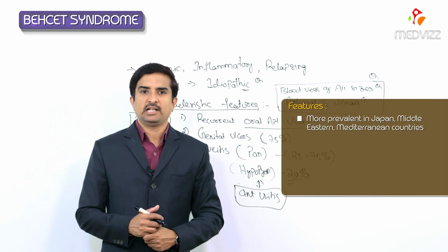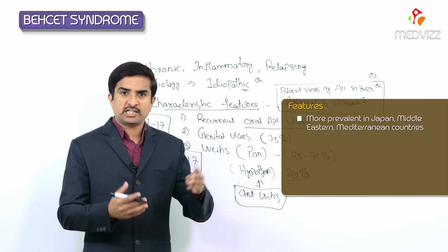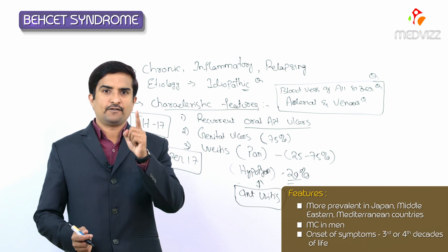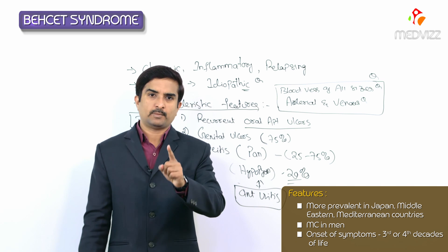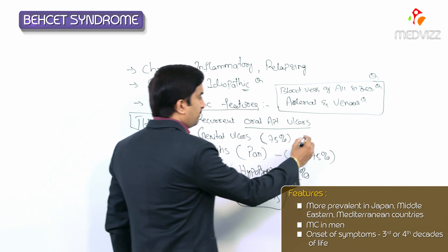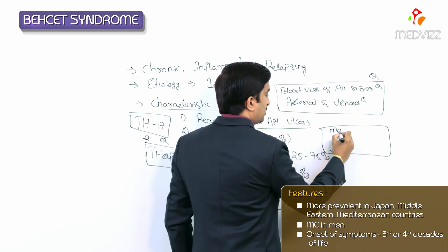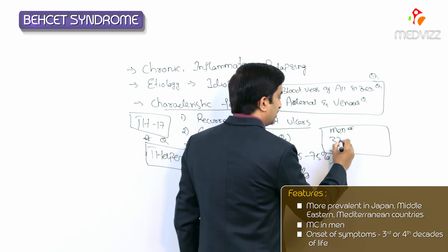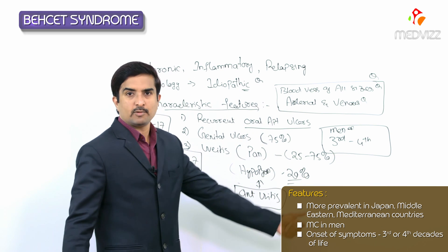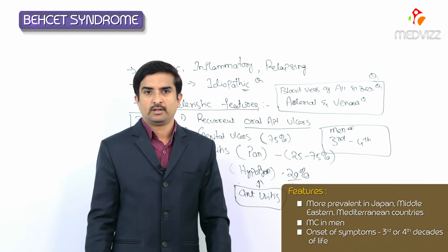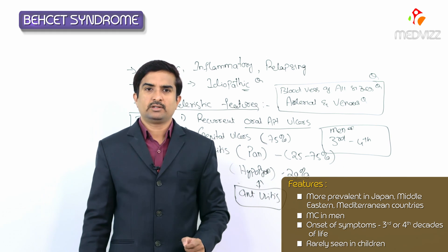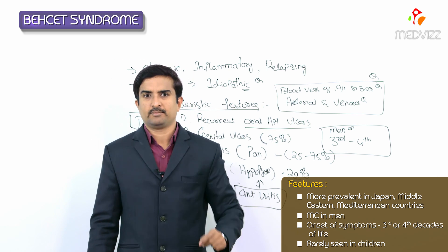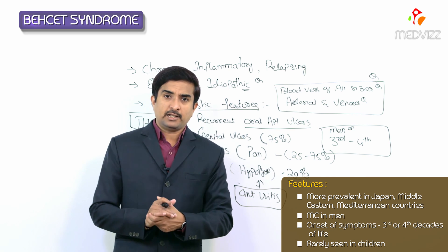Behçet's disease, while uncommon, is most prevalent in Japan, the Middle East, and Mediterranean countries. In these populations it affects men more often than women, and onset of symptoms typically occurs during the third to fourth decades of life. It can rarely present during childhood, usually in children with a positive family history of the syndrome.